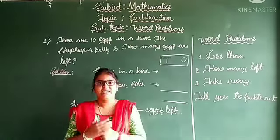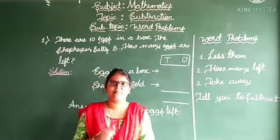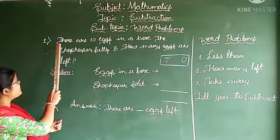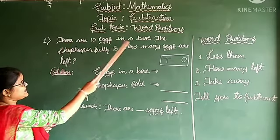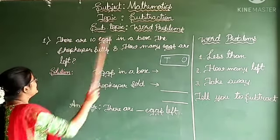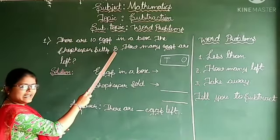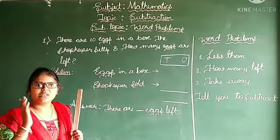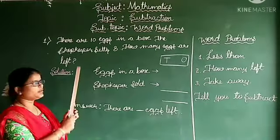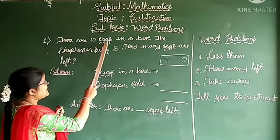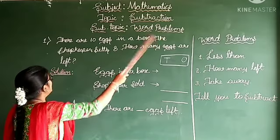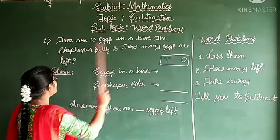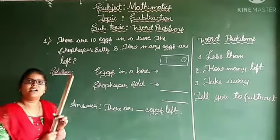Whenever these kinds of words appear in your problem, keep in mind that you have to subtract the given two numbers. Now let us solve example number 1. There are 10 eggs in a box. The shopkeeper sells 8. How many eggs are left?